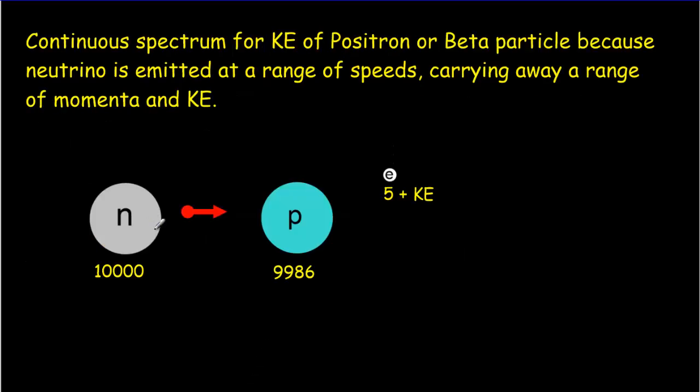A neutron has a certain amount of mass energy, and we would take its mass and multiply by c squared to find out what that mass energy is. I'm making up special units of mass energy just for this purpose so that the numbers come out nice. But a neutron in these special units has a mass energy of 10,000.